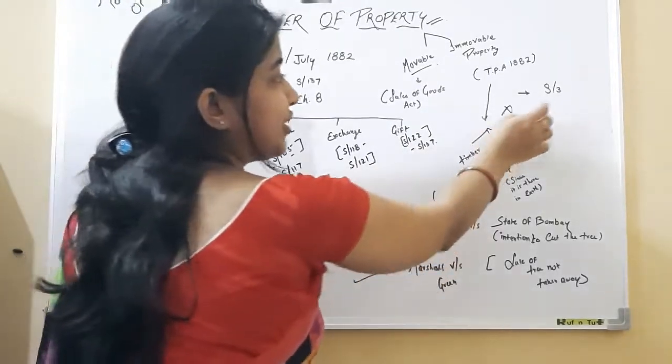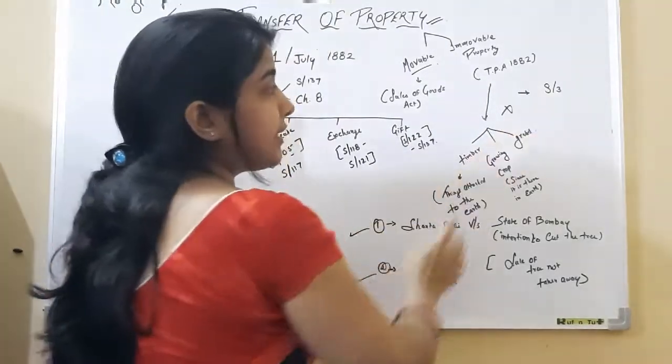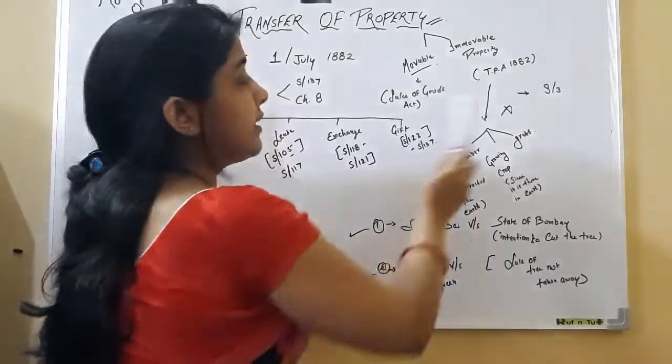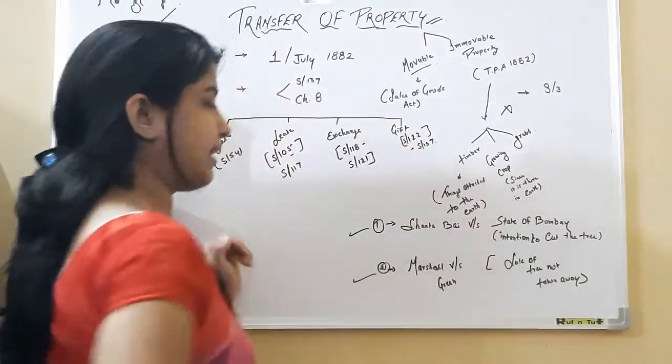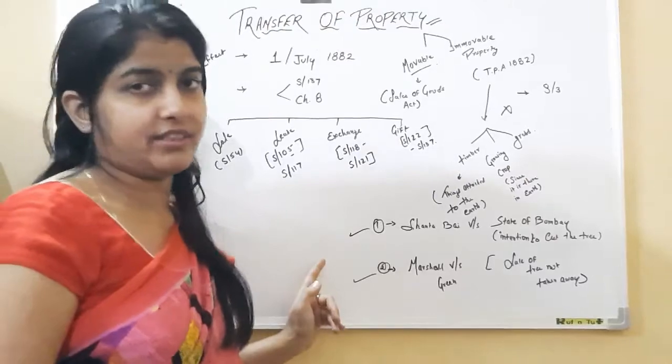This is all about section 3 of Transfer of Property and that immovable property does not include timber, growing crops, and grass. And two cases were there.